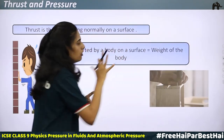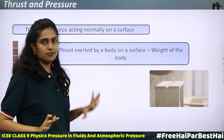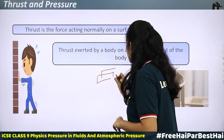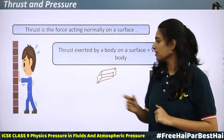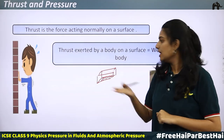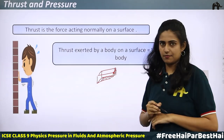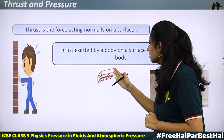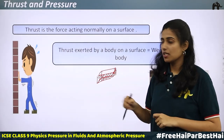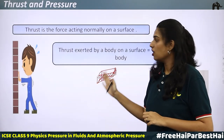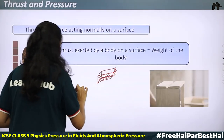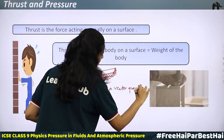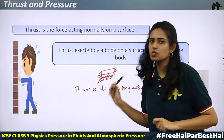Thrust is the force acting normally on a surface, and it equals the weight of the body. For example, a box can be placed in different orientations — with different faces as the base — but there is no change in weight regardless of orientation, so there is no change in thrust. Since force is a vector quantity, thrust is also a vector quantity.